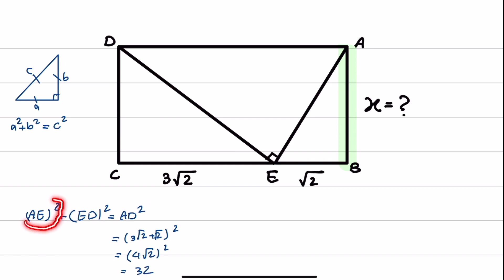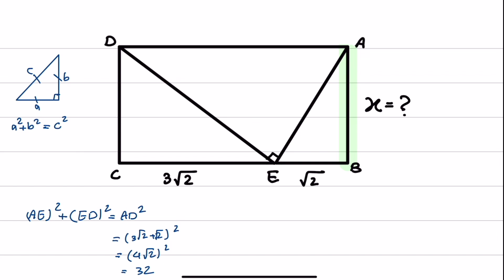Now we have AE squared and ED squared. AE squared, because this is a right triangle, is equal to EB squared plus X squared. And ED squared, the term that you see here, is equal to CD squared plus CE squared. So let's replace these expressions.